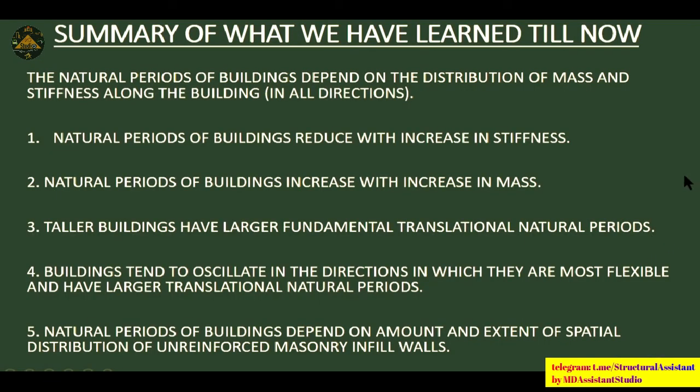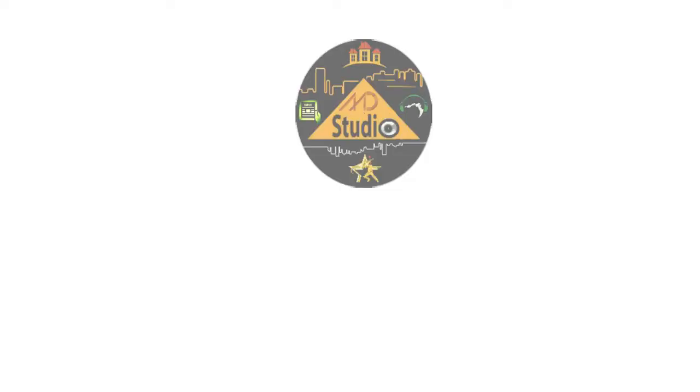In summary: the natural period of a building depends on the distribution of mass and stiffness. It reduces with an increase in stiffness and increases with an increase in mass. Taller buildings have larger fundamental translational natural periods. Buildings tend to oscillate in the direction in which they are most flexible, resulting in larger translational natural periods. The natural period also depends on the amount and extent of the spectral distribution of reinforcements.